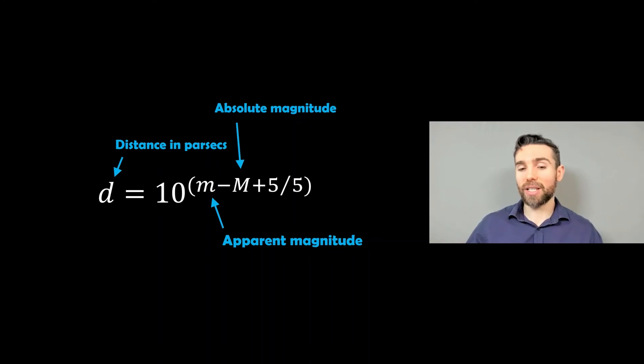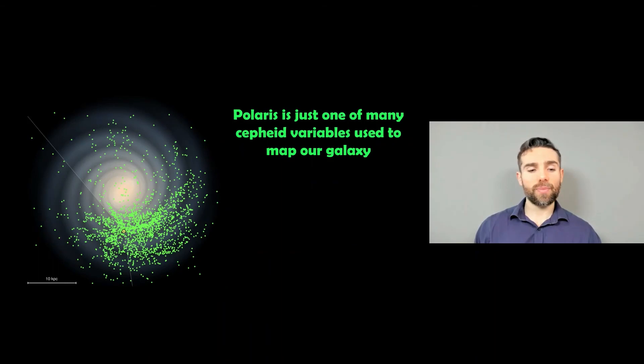So these pulsating stars are very useful for measuring distances in our local neighborhood. They're not so great for doing very far distances because they're not that bright. You need supernovas and other measurements to do that. But for our local neighborhood, these are very good for measuring distances. And it's actually how our local neighborhood has been mapped out as well.